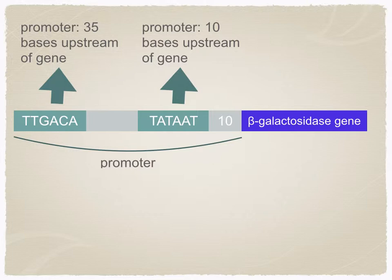The TATAT sequence is 10 bases upstream of the gene and is essential for transcription. TTGACA is 35 bases upstream from the gene, and this allows for a higher rate of transcription.